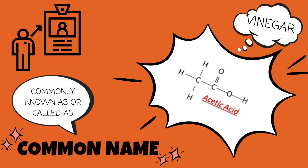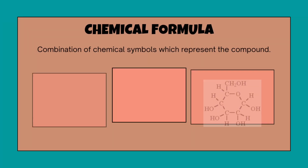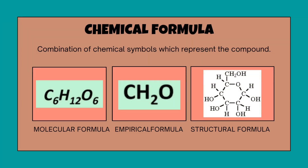The common name of a substance is what it is commonly known as or commonly called. For example, the vinegar we use in cooking is known as acetic acid as its chemical name, and their chemical formula is used to represent them. By definition, a chemical formula is a combination of chemical symbols which represent the compound.